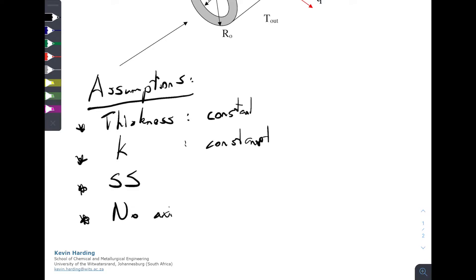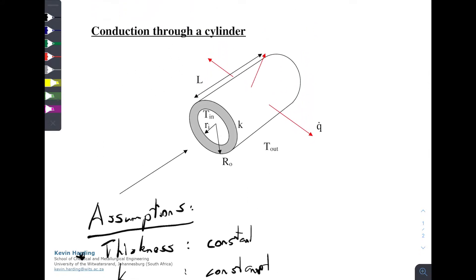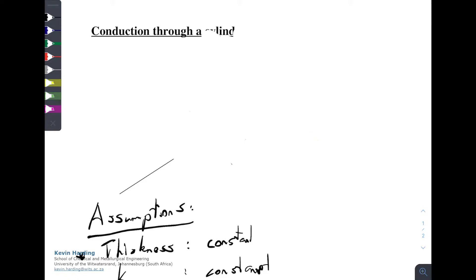The next assumption is no axial heat flow. In the diagram we've highlighted that heat is going to be flowing out radially — at 90 degree angles from the pipe itself — but in the axial direction there is no heat transfer. That means there is no temperature difference axially, so the temperature on one side is equal to the temperature on the other side. This assumption will become important when we come to heat exchangers, when it is no longer true.